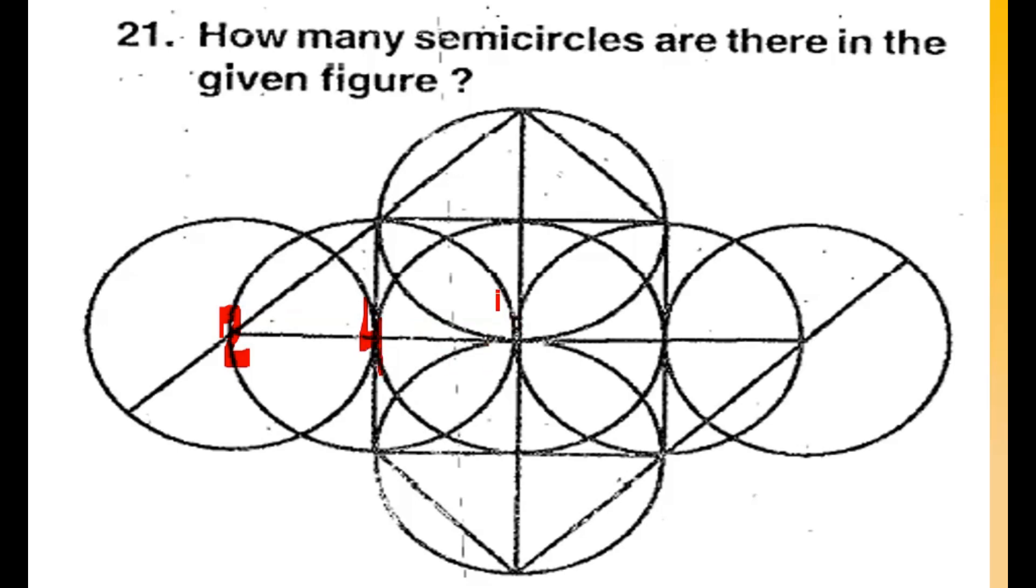Again here, two diameters, so four semicircles. This circle has two diameters, so four semicircles. And this circle has one diameter, so two semicircles. Here two diameters, so four semicircles. Again, two diameters, four semicircles. So there are five circles with two diameters, so there are four into five, twenty semicircles, plus this two and two, so twenty-four semicircles.